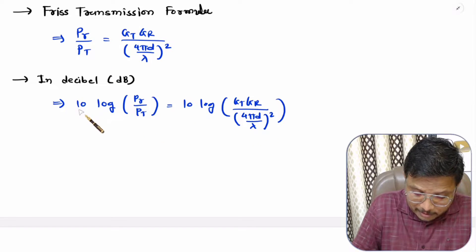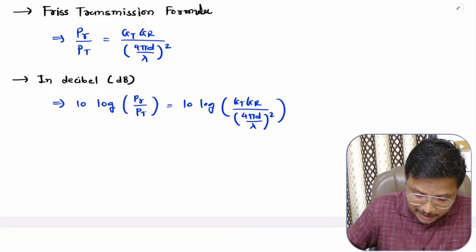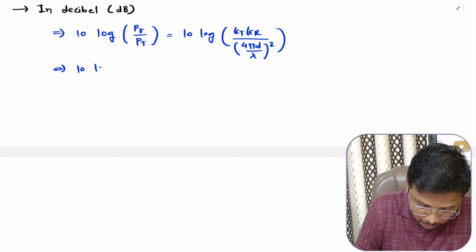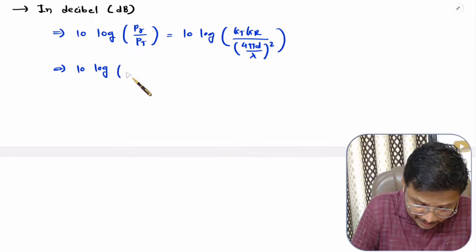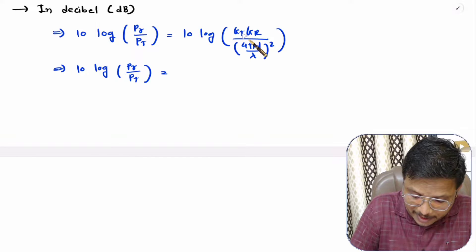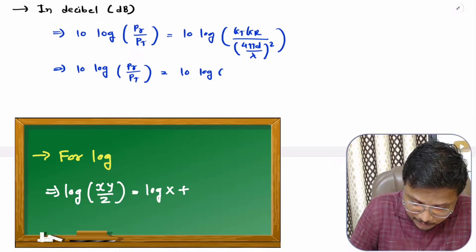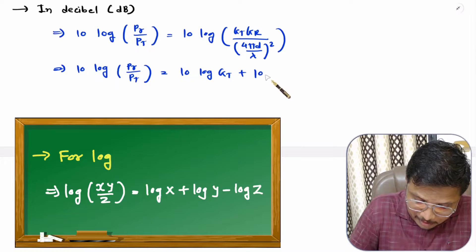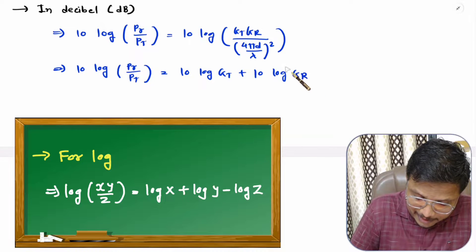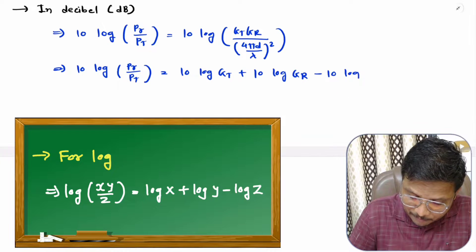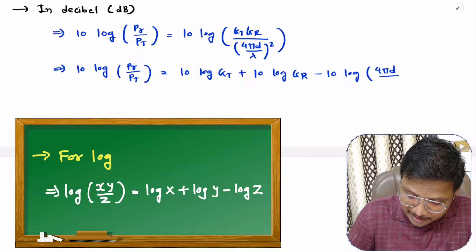Once you take this equation in the form of dB, we can apply the property of log. So on this side we have 10 log of PR by PT. We have GT and GR in multiplication, so we can write 10 log of GT plus 10 log of GR. And (4πD/λ) whole square is in division, so we can write minus 10 log of (4πD/λ) whole square.